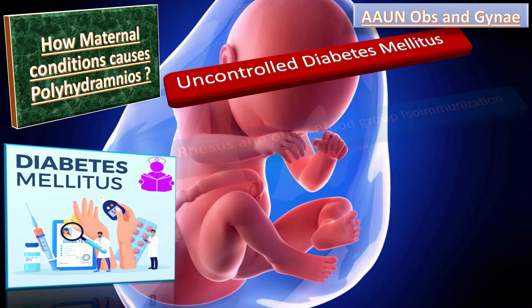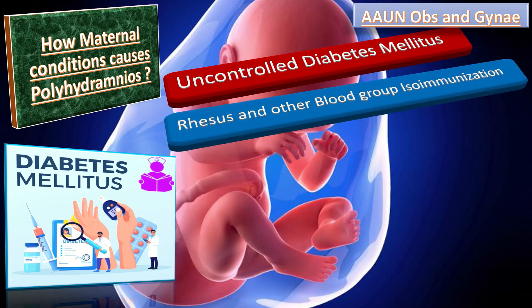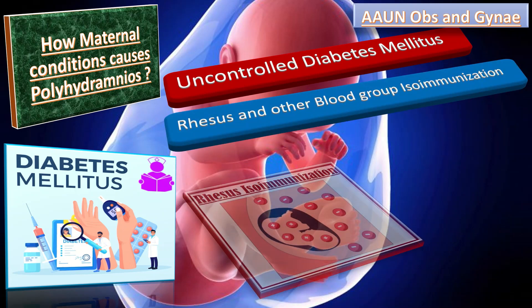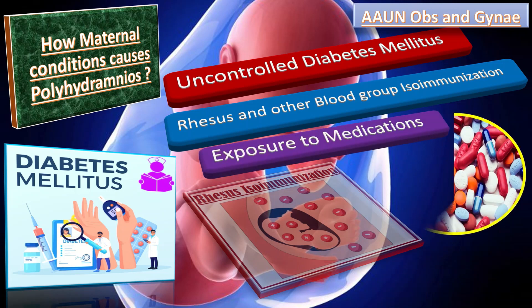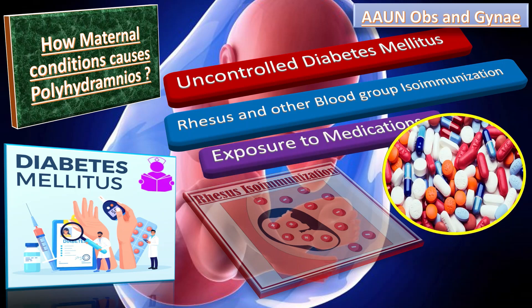Secondly, Rhesus and other blood group isoimmunization: when a mother has Rh-negative blood type and the baby has Rh-positive blood group, this can cause the baby to develop a type of anemia, which can in turn lead to polyhydramnios in order to compensate the hypovolemia due to anemia. Thirdly, exposure to medications such as lithium leads to fetal diabetes insipidus, resulting in polyhydramnios.